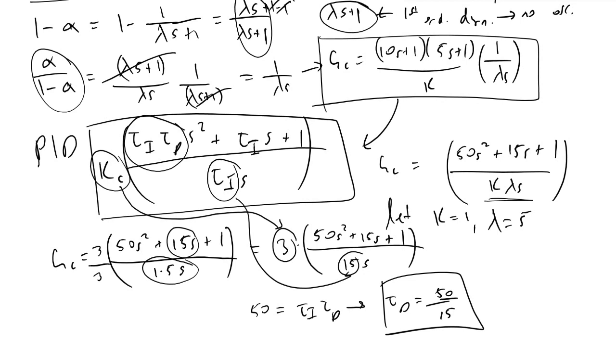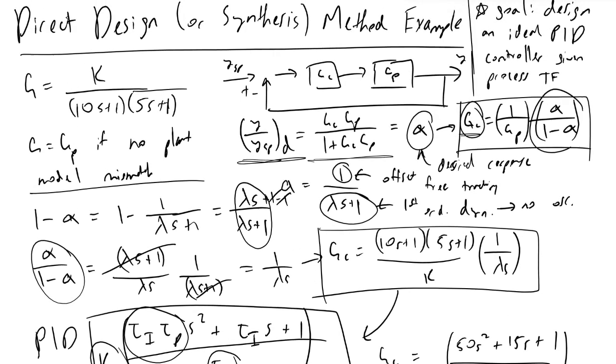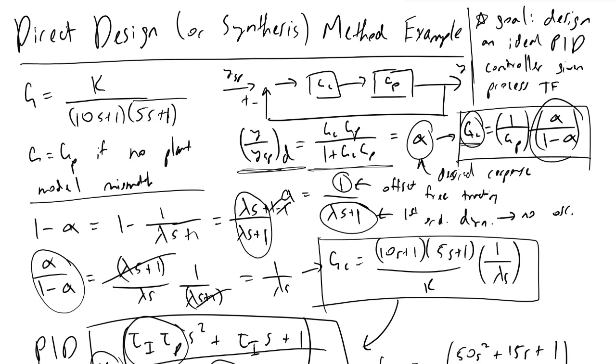And so we've just evaluated all three of our PID tuning parameters based on this one lambda value. This k value is from our process model. So hopefully we're accurate in our model creation. And this lambda is based off how much performance or robustness we want to go with. But this wraps up how we can perform a direct design or direct synthesis to build a PID controller based off some kind of second order process transfer function. I hope you guys find it useful. Let me know if you have any questions. Thanks for watching.